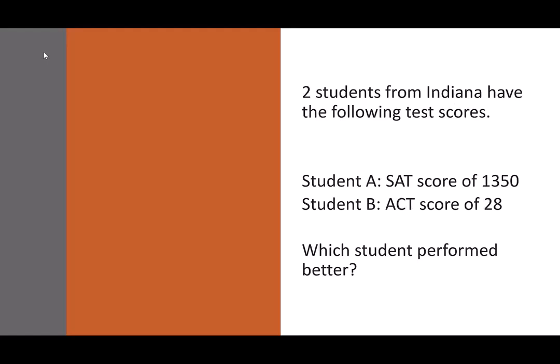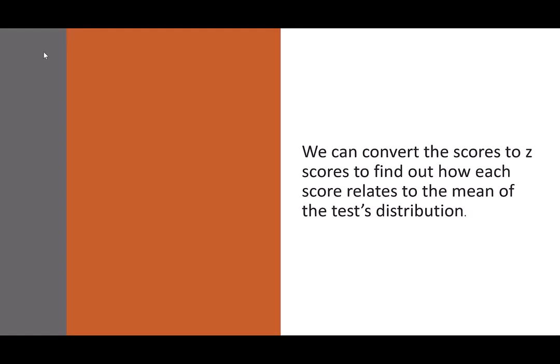So here's an example. Say we had two students from Indiana and they have these test scores. Student A took the SAT and made a 1,350. Student B took the ACT and made a score of 28. So which student did better? To figure that out, we can convert the scores to z-scores to find out how each score relates to the mean of the test distribution. So which one is farther away from the mean is a better score. The higher z-score, the better somebody performed.